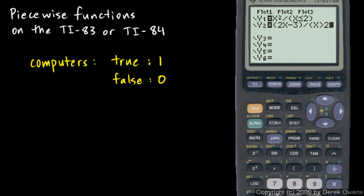So we basically use the Boolean logic there, the greater than and less than true or false values, to cause the function to be either defined or not for certain values of x. And that's how to enter piecewise functions on a TI-83 or TI-84 calculator.